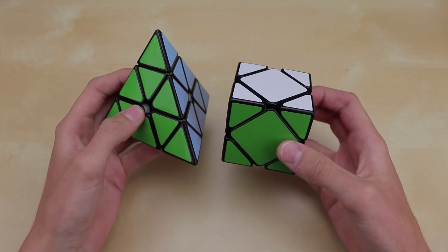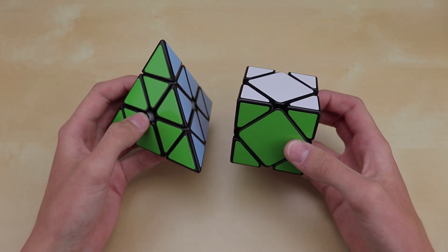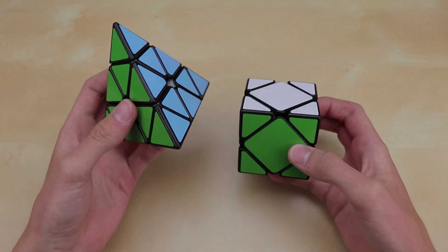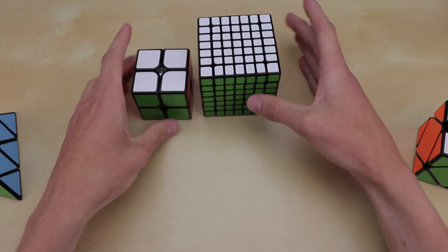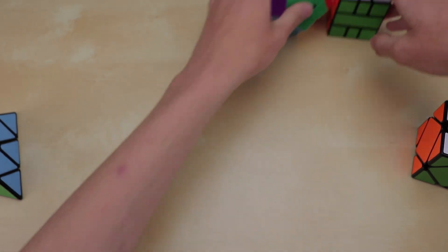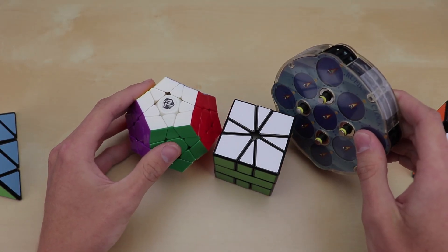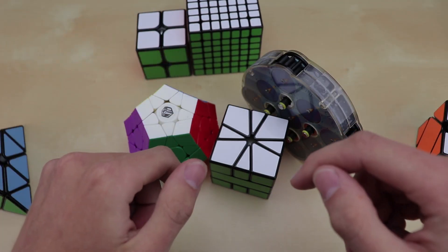Now today is going to be the last of my tutorials explaining how to scramble cubes using WCA scrambles and according to the WCA regulations. Previously, I've done a video on 2x2 through 7x7 scrambles, and I've also done a video on megaminx, square one, and clock scrambles. Both of those tutorials will be down in the description.